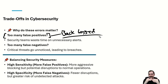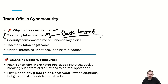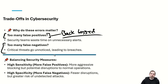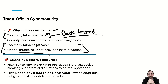I've already given you the SolarWinds example for too many false negatives — critical threats go unnoticed. Things like missed patches, software vulnerabilities, and most importantly, breaches going unnoticed. That's definitely a problem.